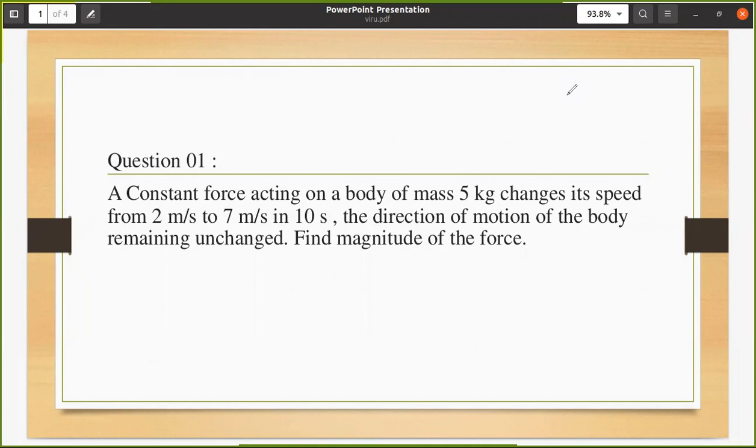Let's read the question. Try it on your own first. A constant force acting on a body of mass 5 kg changes its speed from 2 m/s to 7 m/s in 10 seconds. That means in the 10 second gap, the velocity is climbing up by 5 m/s, from 2 m/s to 7 m/s.